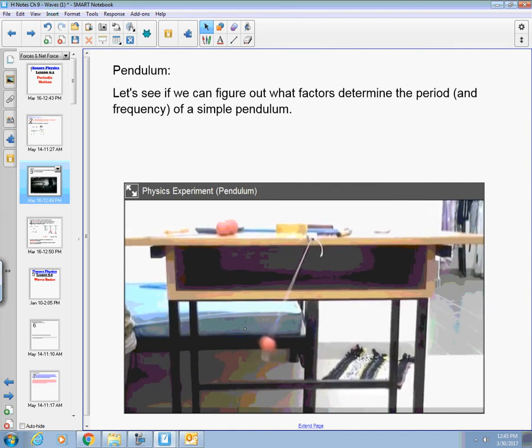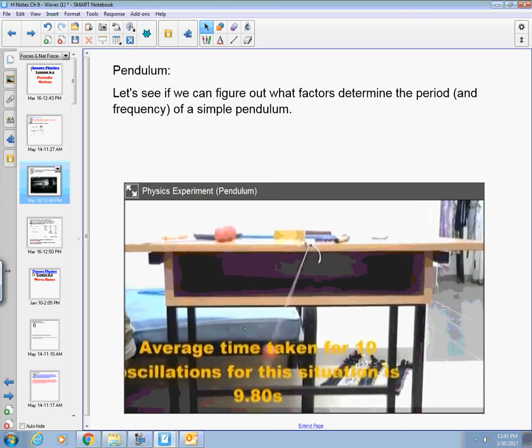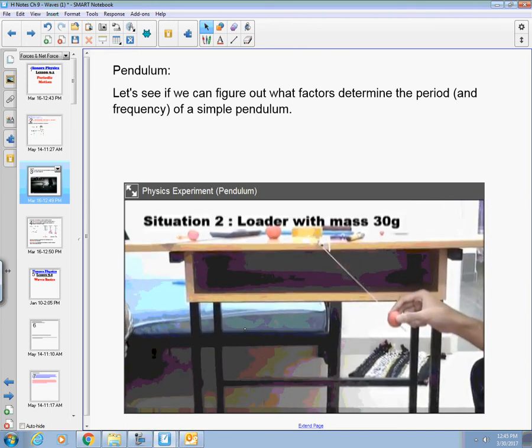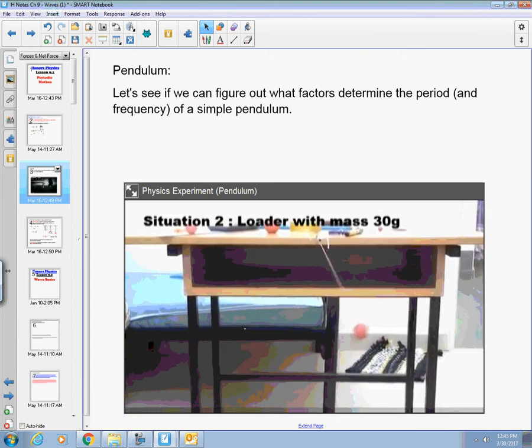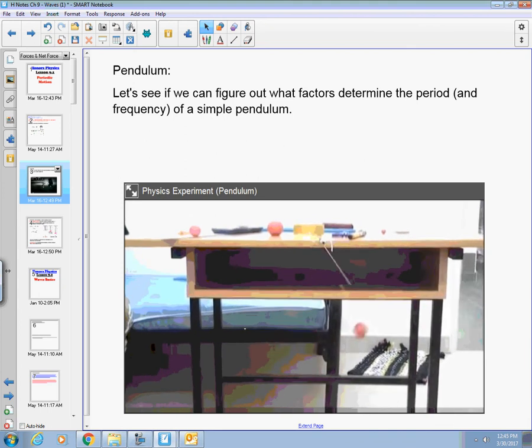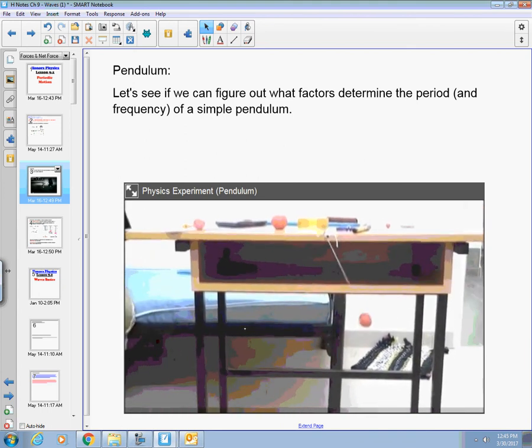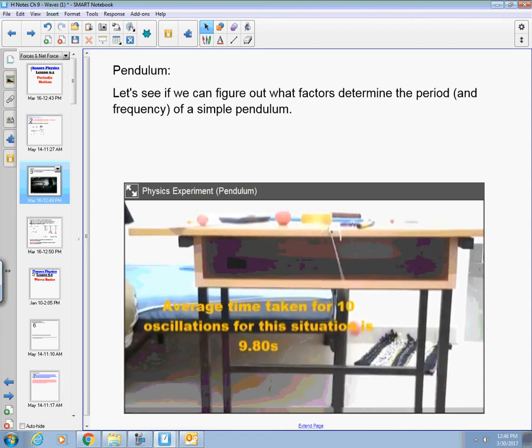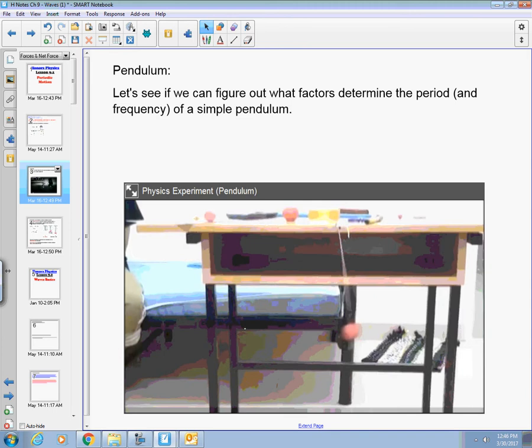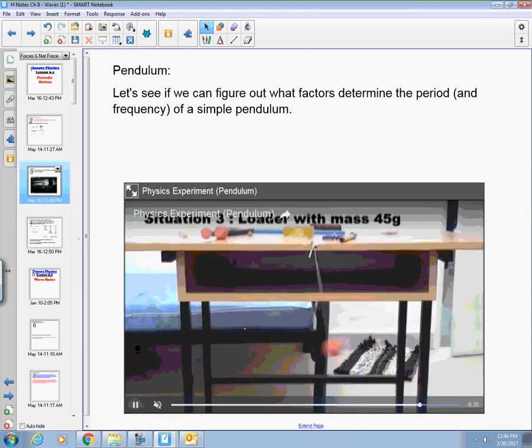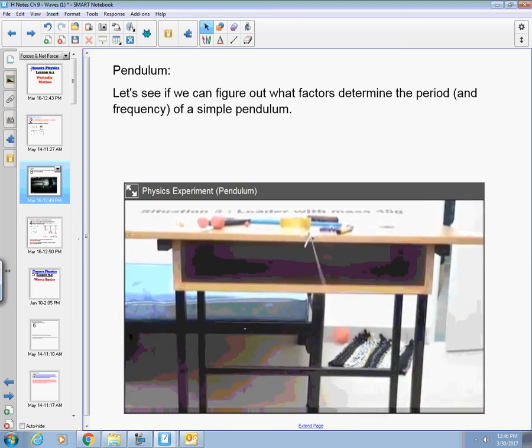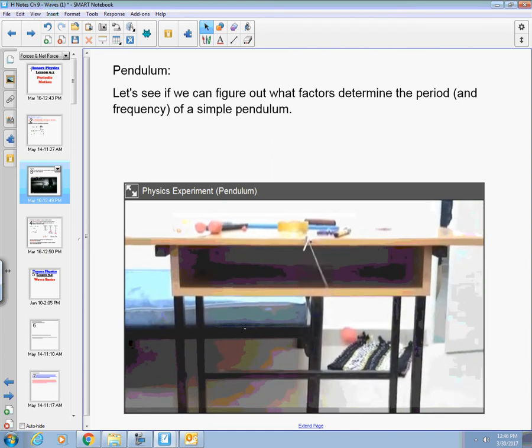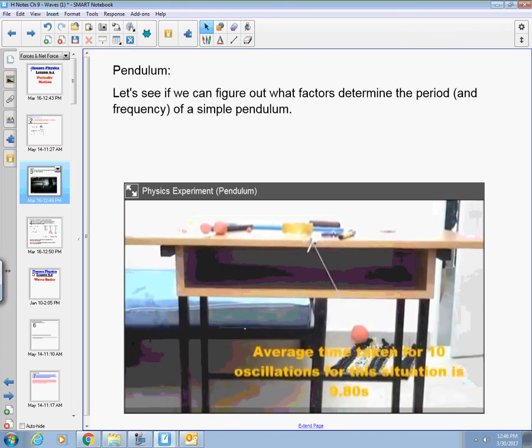And just like with the length, we're going to do three different masses. And the first one we get is 9.8 seconds for our period. Trial number two, now with 30 grams, so we've doubled the mass. And we get the same period, even though our mass has increased. So what we're going to do is we're going to try it one more time, now with even larger mass, and see how that is going to affect our period. Big thumbs up to you too, buddy. And again, we get the same period.